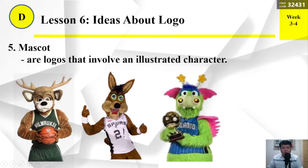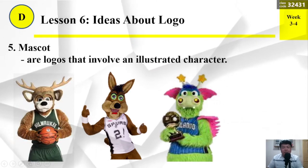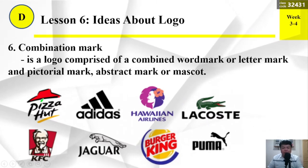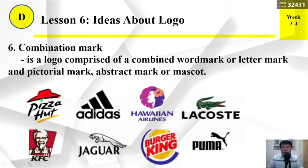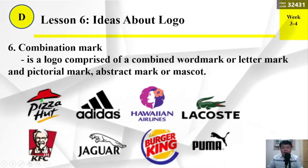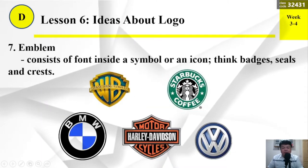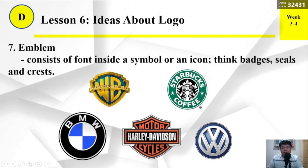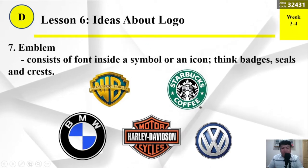Number 5: Mascot — logos that involve an illustrated character. Number 6: Combination mark — a logo comprised of a combined word mark or letter mark and pictorial mark, abstract mark, or mascot. Number 7: Emblem — consists of font inside a symbol or an icon. Think badges, seals, and crests.